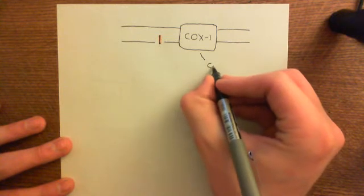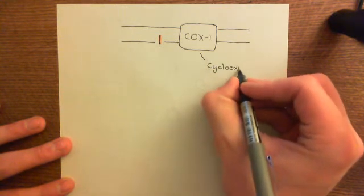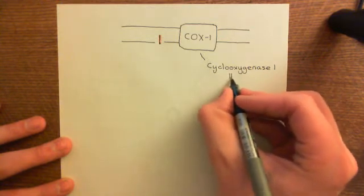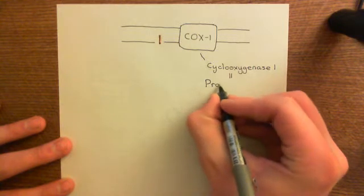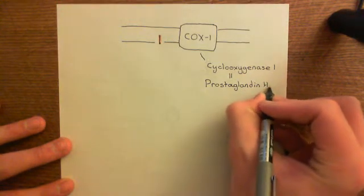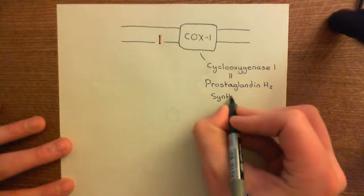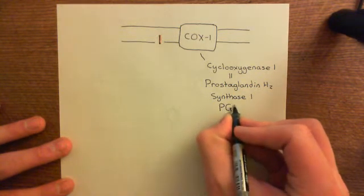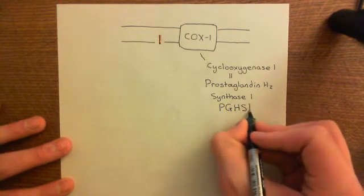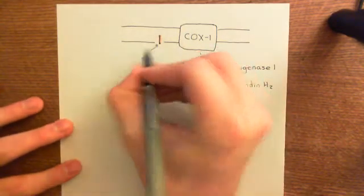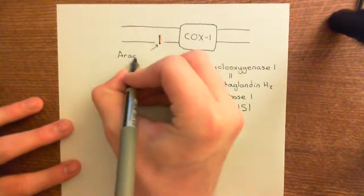What does COX-1 stand for? Well, it stands for cyclooxygenase 1. This also has an old name — this is the more modern name that any reasonable person will use, however it has an old name that is still occasionally used: prostaglandin H2 synthase, type 1. For this reason, you will sometimes hear COX-1 referred to as PGHS-1, so don't let that confuse you. COX-1 is going to do two things to arachidonic acid — it's going to catalyze one reaction, and then it's going to catalyze another reaction.